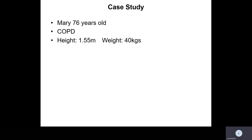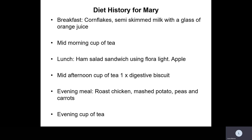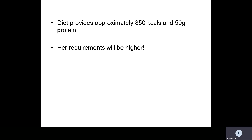Case study: Mary is 76 years old with COPD. She has a height of 155 cm and weighs 40 kg. Normally she has cornflakes with semi-skimmed milk and orange juice for breakfast, a cup of tea mid-morning, a ham sandwich using a light spread with an apple for lunch, tea and a digestive biscuit in the afternoon, roast chicken with mashed potatoes, peas and carrots for dinner, and a cup of tea before bed. Her diet only provides approximately 850 calories and 50 grams of protein, but her requirements are much higher — she probably still requires around 1800 calories per day.